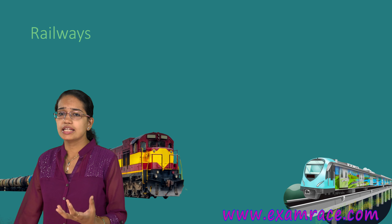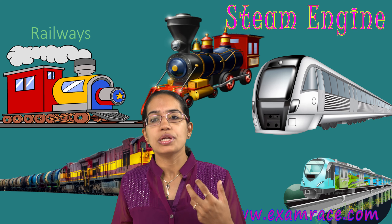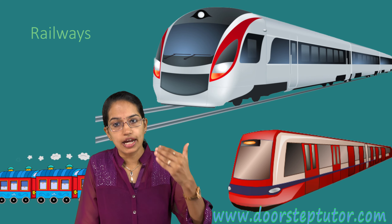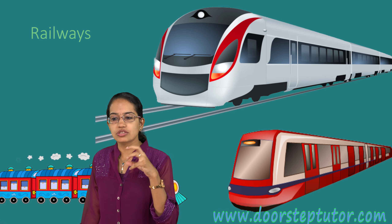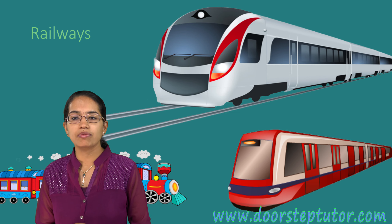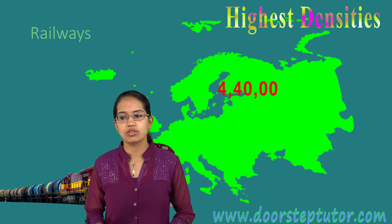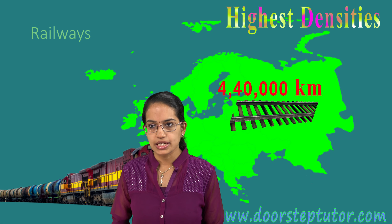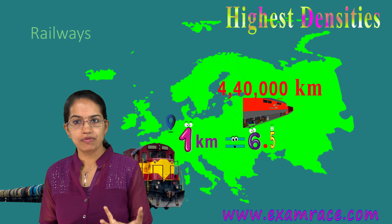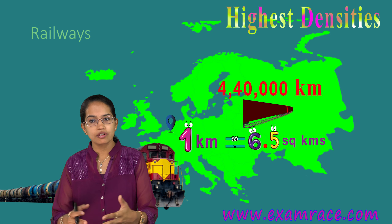In railways, we moved from steam engines to coal, then diesel, and finally electric engines. Electric trains led to bullet trains, Shatabdi trains, and Train 18 — a trainless engine. Europe has the highest density of railway network globally, with about 440,000 km of railway, either double or multi-tracked. Belgium has the highest railway density — one km of railway per 6.5 square km. Industrial areas have much higher density to transport materials.